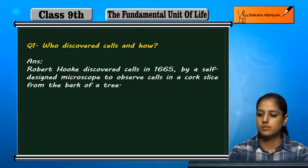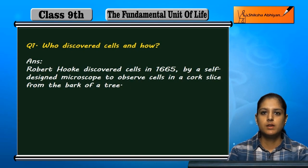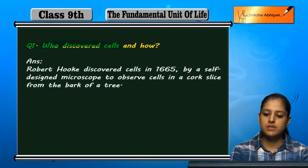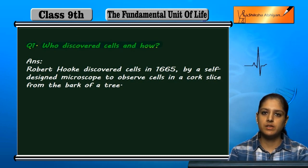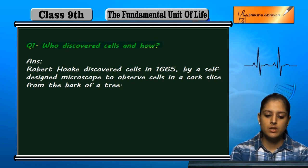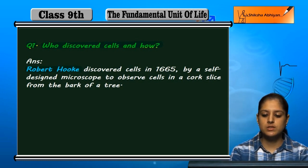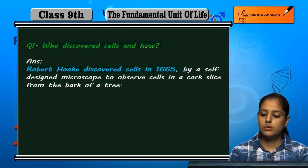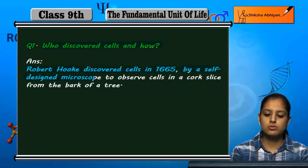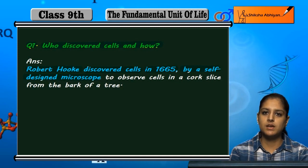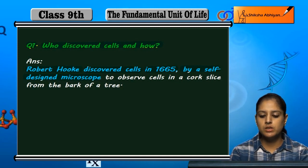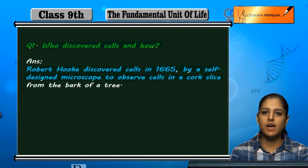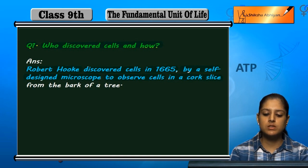Let us discuss some questions. First is: who discovered cells? Cells ko kisne discover kiya? So Robert Hooke was a scientist jisne cells ko discover kiya in the year 1665. Unhone ek self-designed microscope use kiya — apne aap se ek microscope design kiya tha — jisse unhone cells observe kiye in a cork slice.